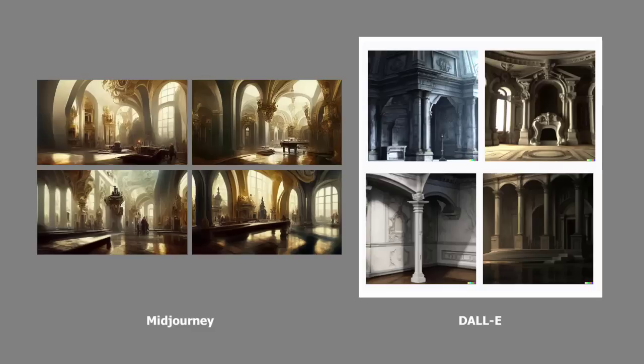As shown earlier, while MidJourney gives you control over the aspect ratio of your image, DALL-E 2 images are always square. You can change this by cropping in Photoshop after the fact, and there are other methods for doing similar things, but it's still a limitation worth mentioning.